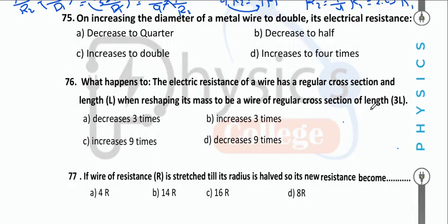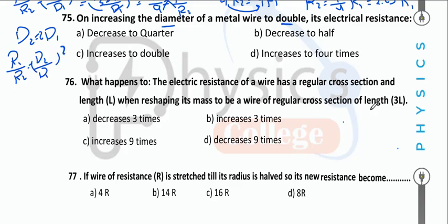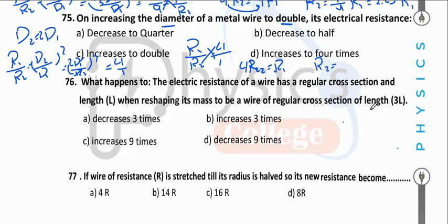On increasing the diameter of a metal wire to double (d2 = 2d1): R1/R2 = (d2/d1)² = (2)² = 4. So R2 = R1/4 — resistance decreases to one quarter.